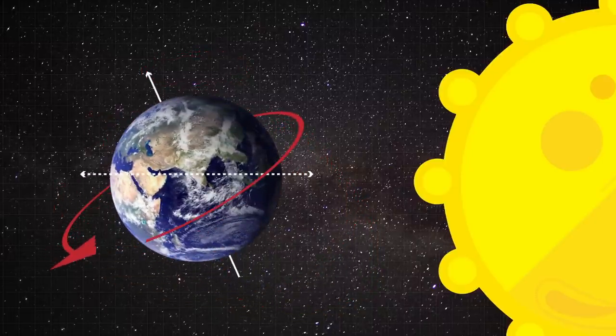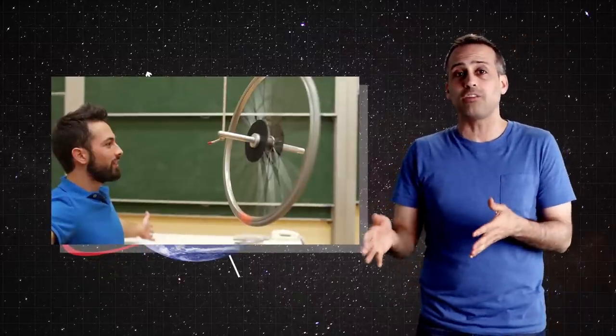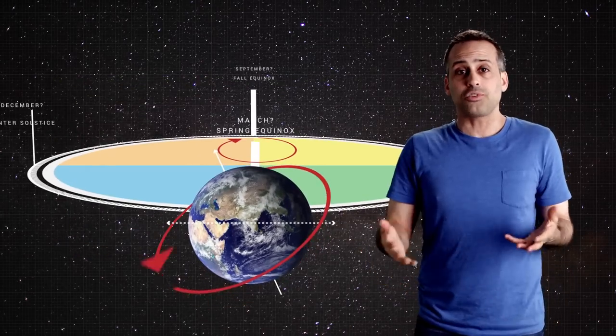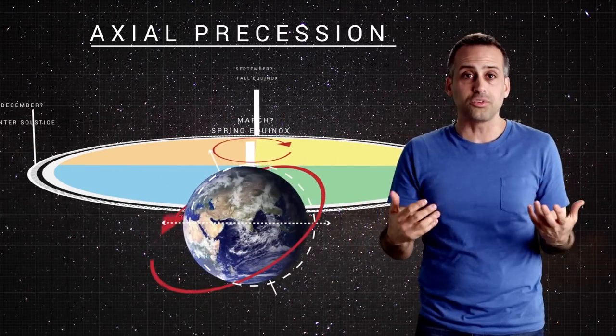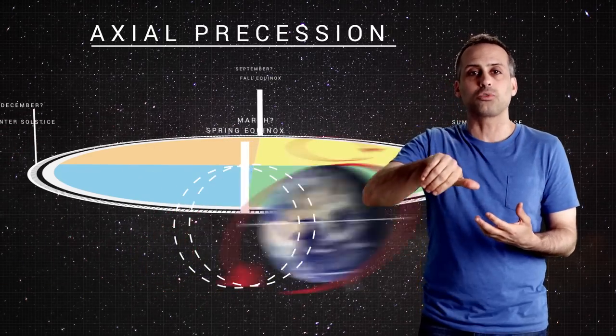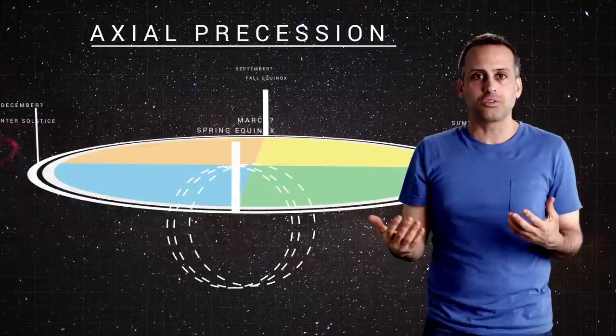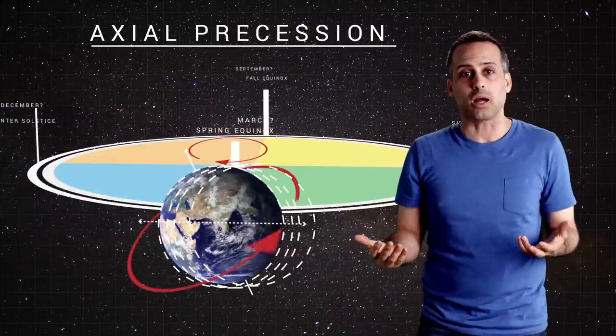If you're interested, Veritasium has a solid video explaining this phenomenon that you can click over here to view. We put that video and a few other good links about gyros in the description. But the fact is that Earth's axis precesses in the opposite sense of Earth's orbit around the sun, so that the equinoxes and solstices backtrack along Earth's orbit. Even the ancient Greeks understood this phenomenon. It's called precession of the equinoxes.